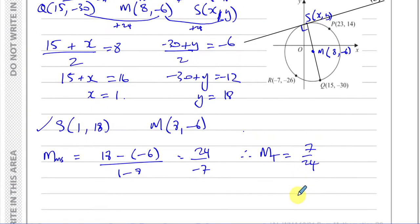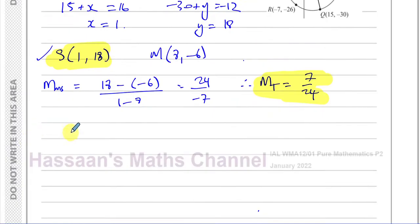So I now know the gradient of the line that I'm trying to find the equation of and I also know a point that is on that line. With those two pieces of information I can find the equation of the line using the formula Y minus Y1 equals M times X minus X1. So I have Y minus 18 equals 7 over 24 times X minus 1.